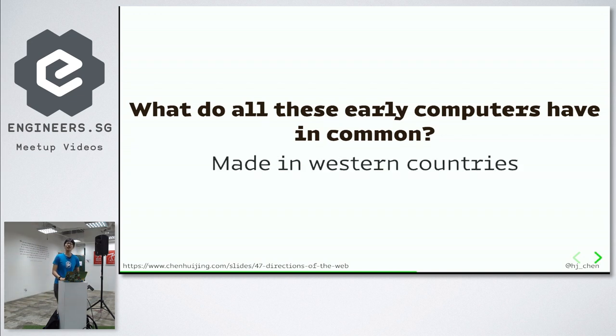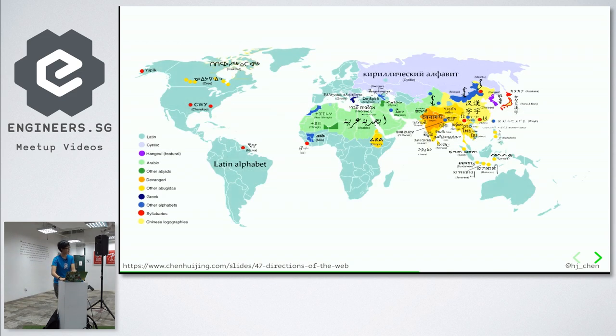But what do all these early computers have in common? Made in Angmoh countries. See? So in most Angmoh countries, their writing system is top to bottom, left to right, like German, English. But if you look at the world as a whole, the writing systems can go in many different directions. Like the Arabic one is right to left. We got the East Asian ones that can go vertical or both. There are some very interesting ones, Inuit up top, Eskimos, there's Russian. So different writing systems, different directions.